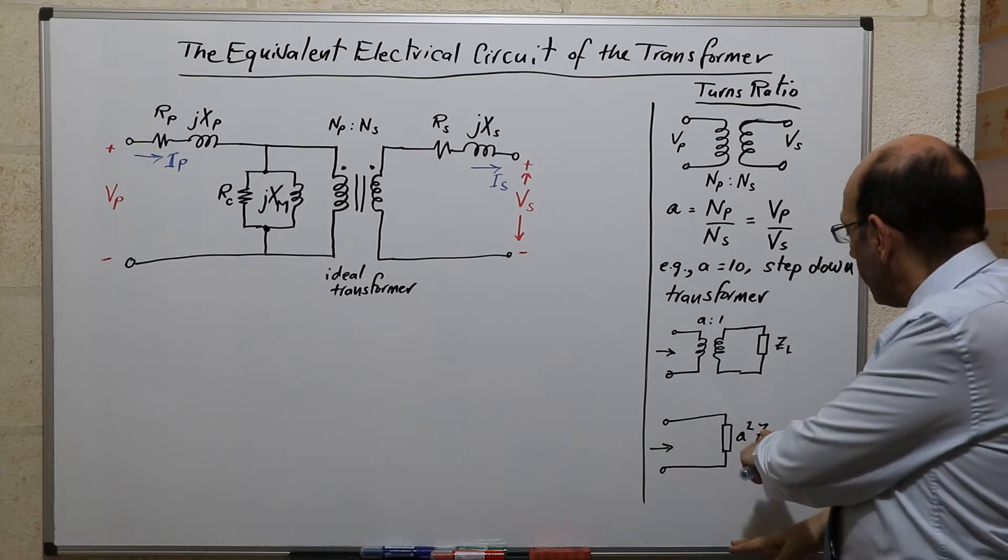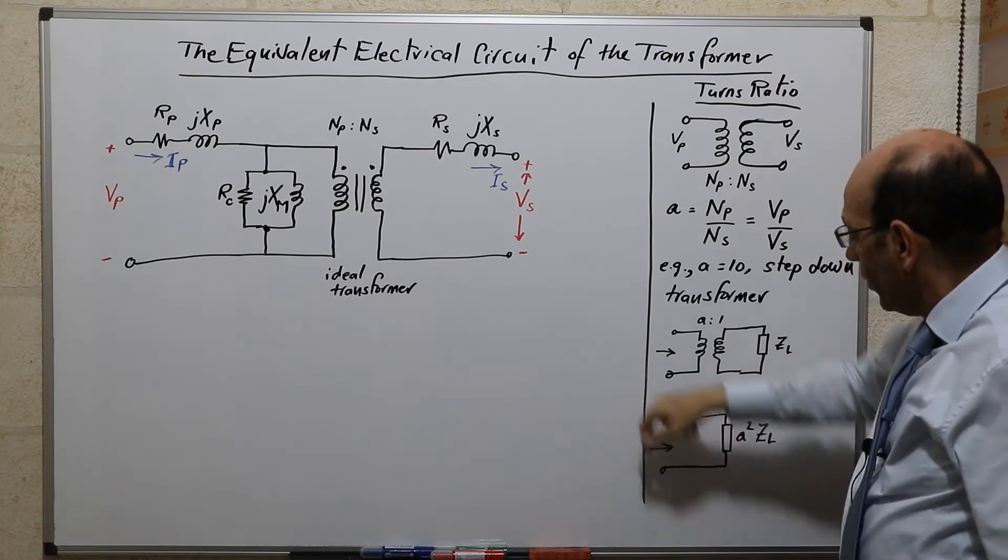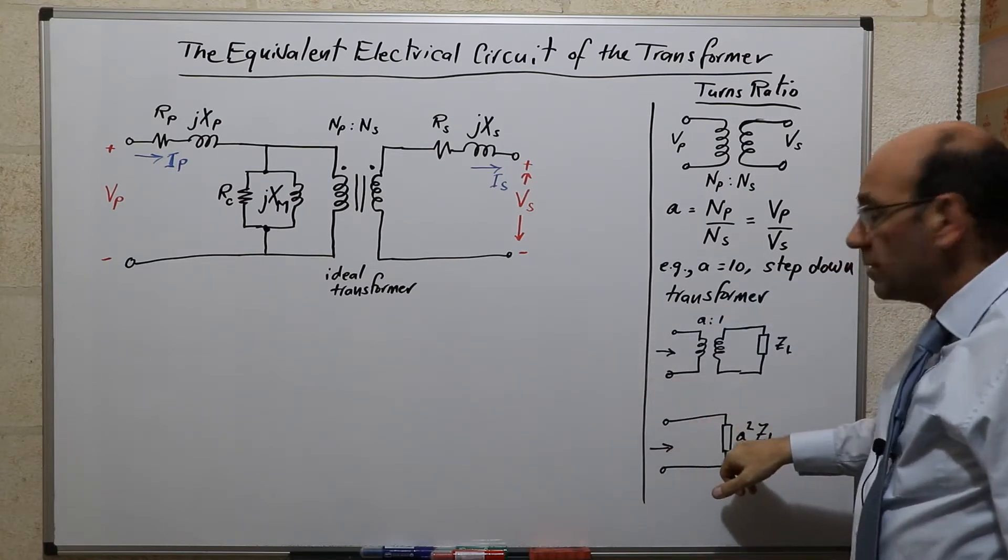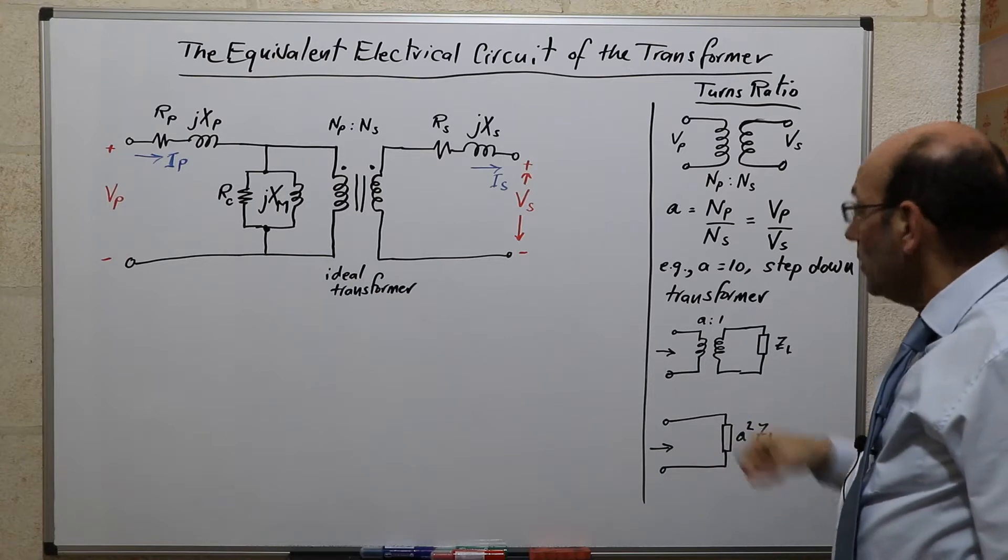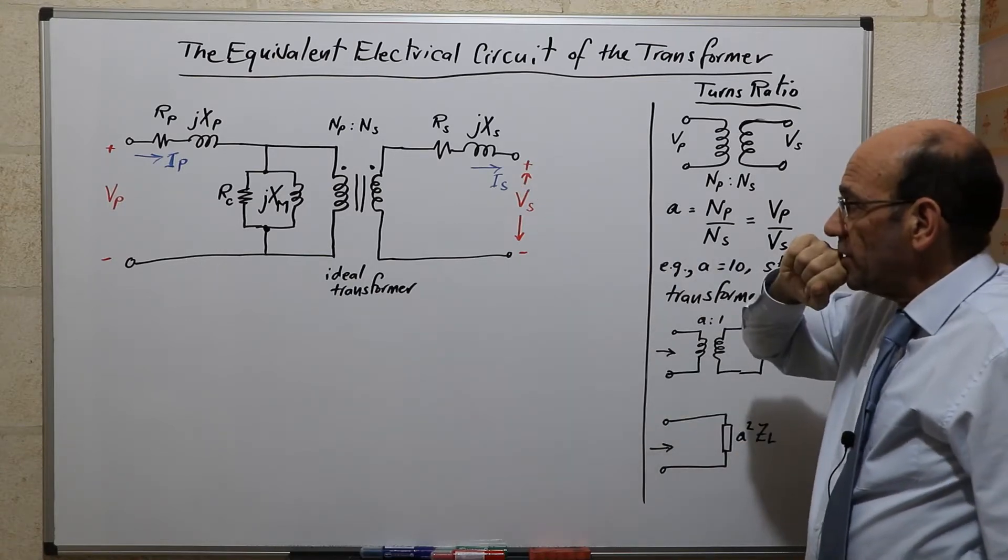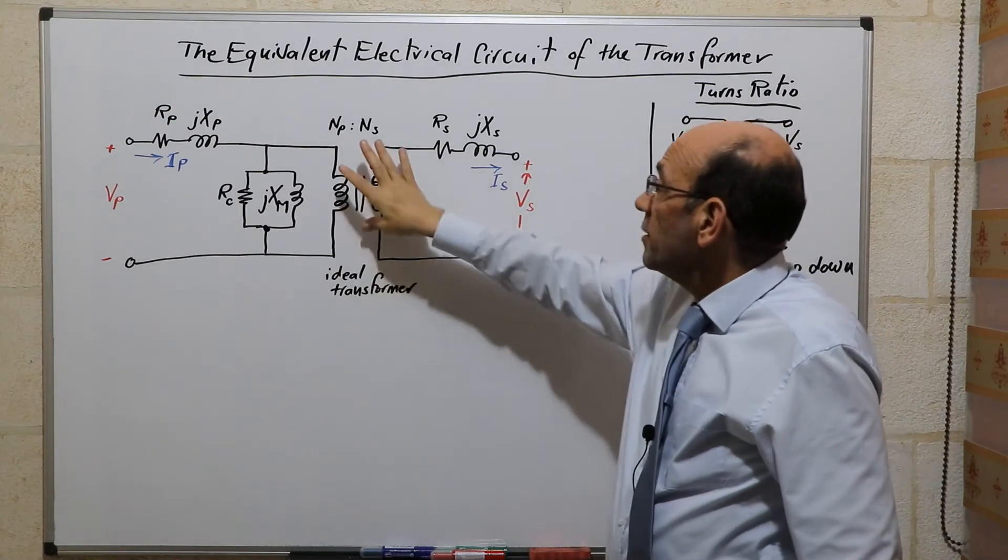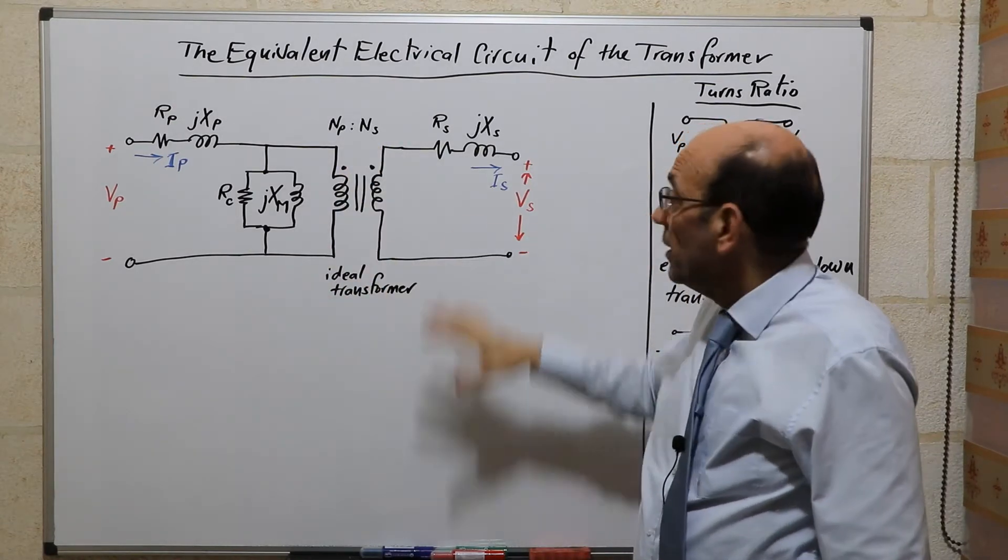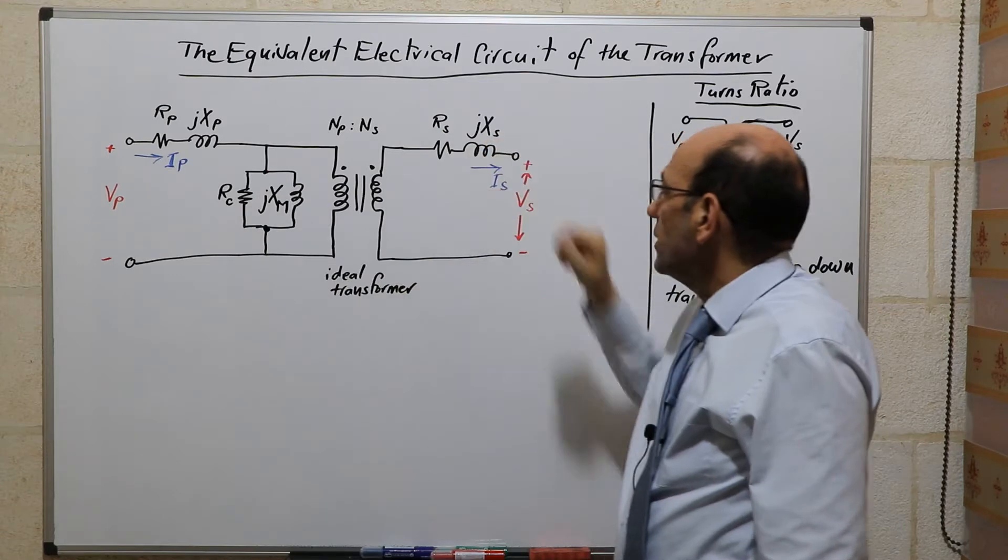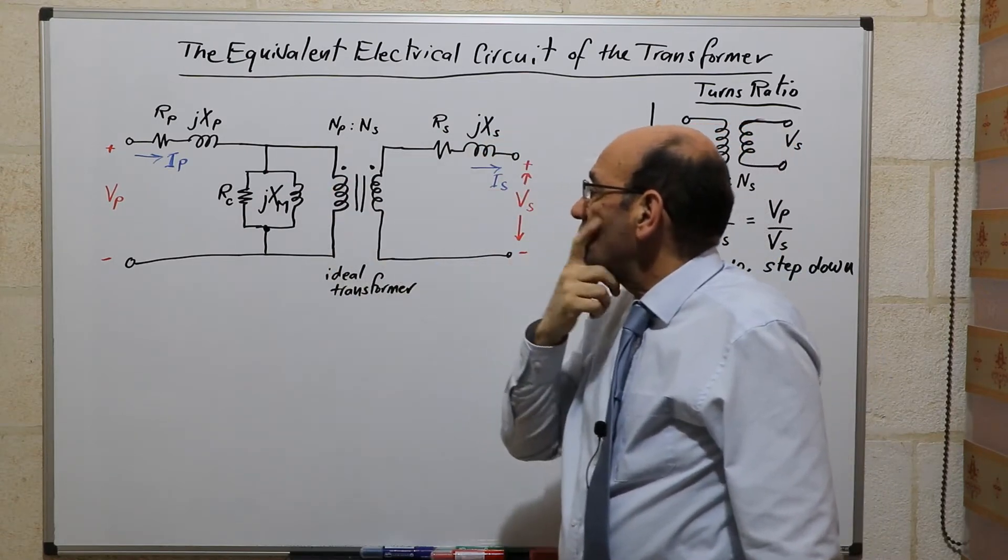Having shown that the impedance, when seen by the primary, is multiplied by a square, we will actually apply this here. So we're going to transform this model into a simple model by removing the ideal transformer and keeping the series impedances and the shunt impedances.